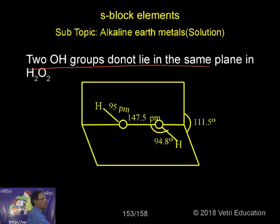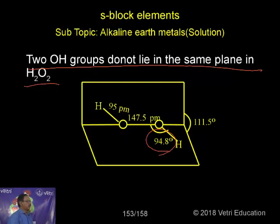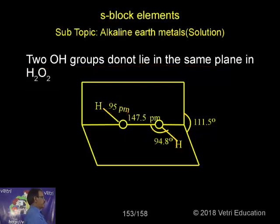Two OH groups do not lie in the same plane in H₂O₂ — one OH is below the plane, another OH is above the plane. This is the interesting information. The bond angle between the OOH and OH bond is 94.8°. The length of OH is 95 pm, and the OO length is 147.5 pm. The dihedral angle is 111.5°. So this is the structure of hydrogen peroxide.